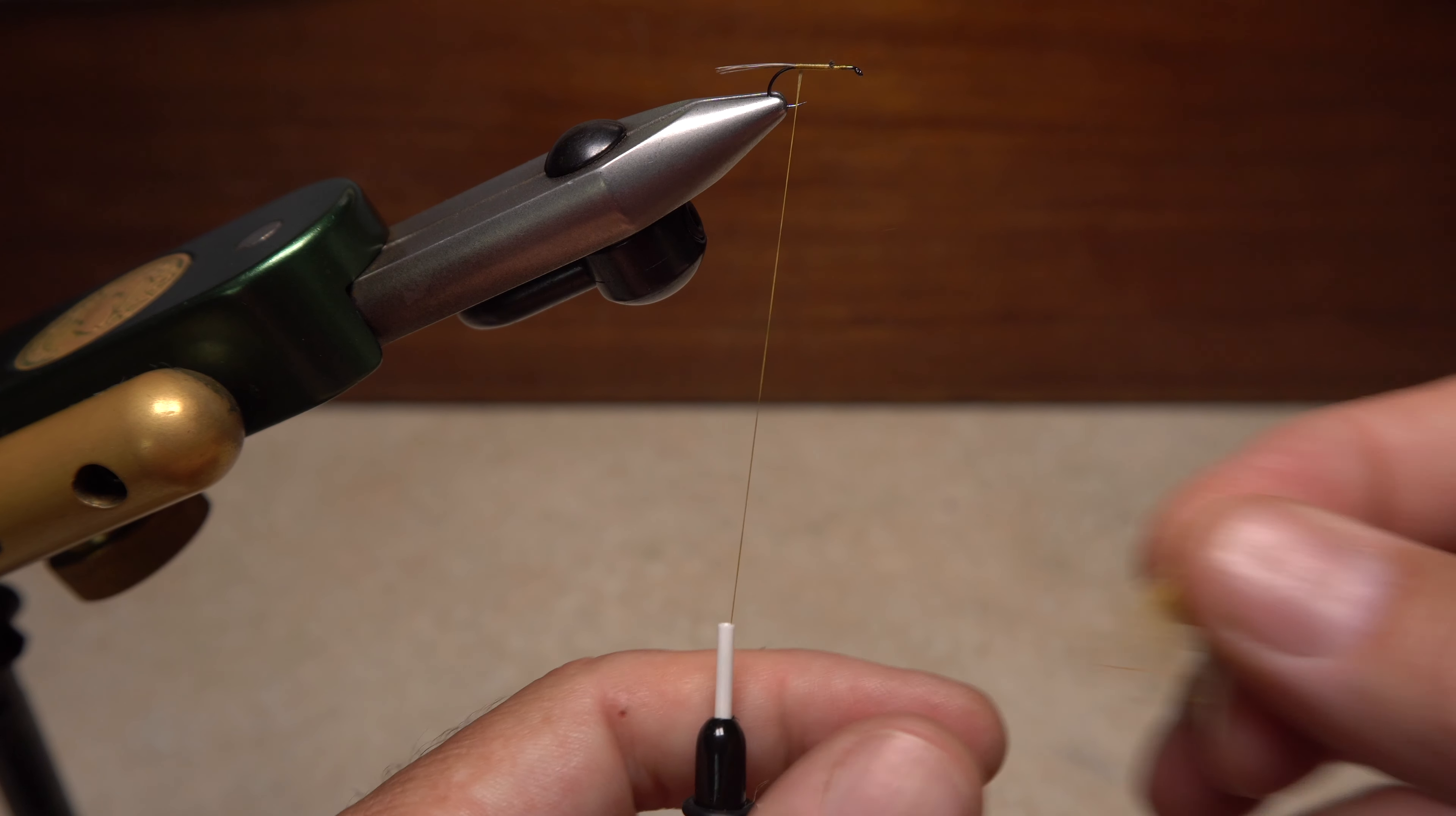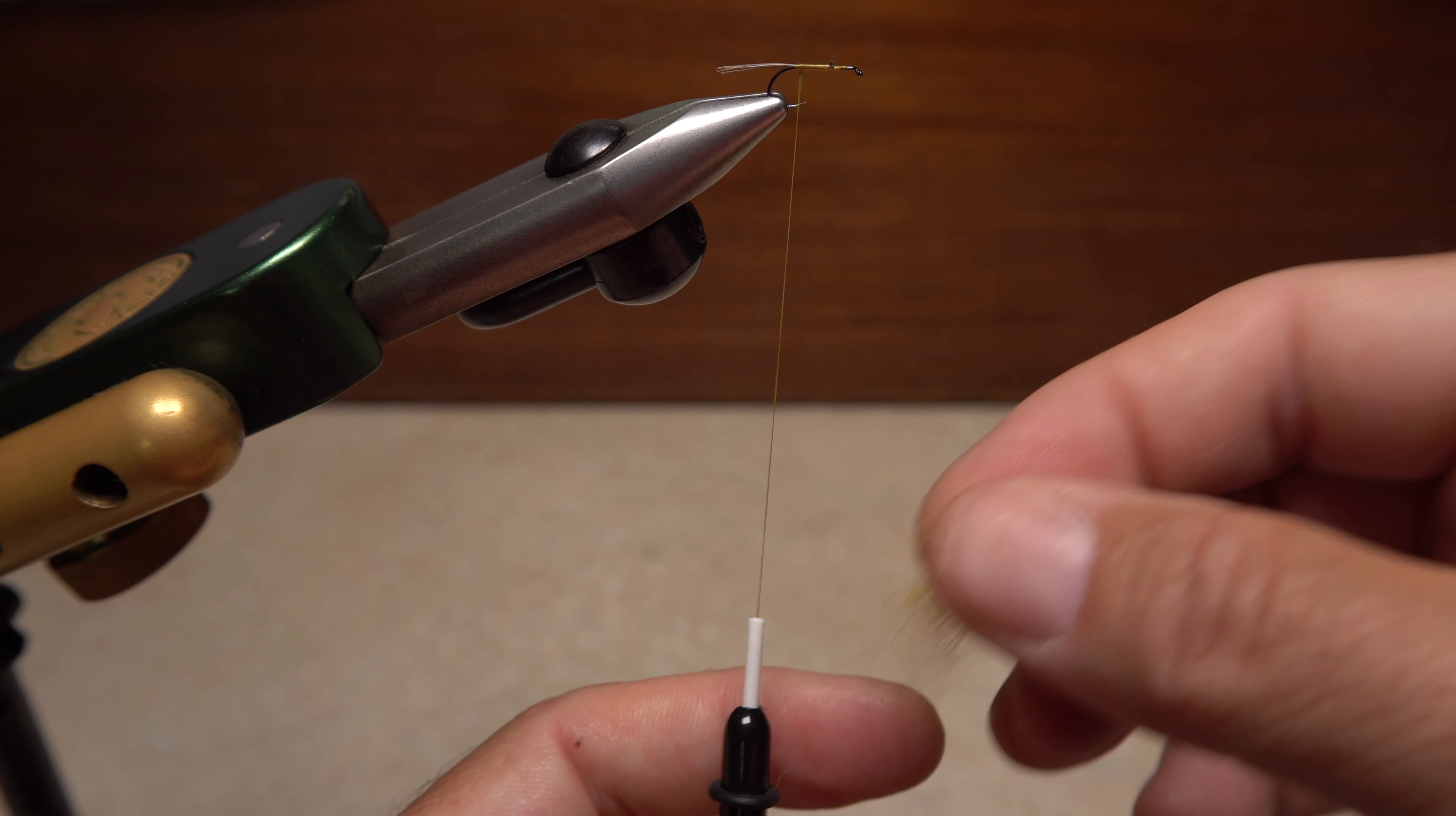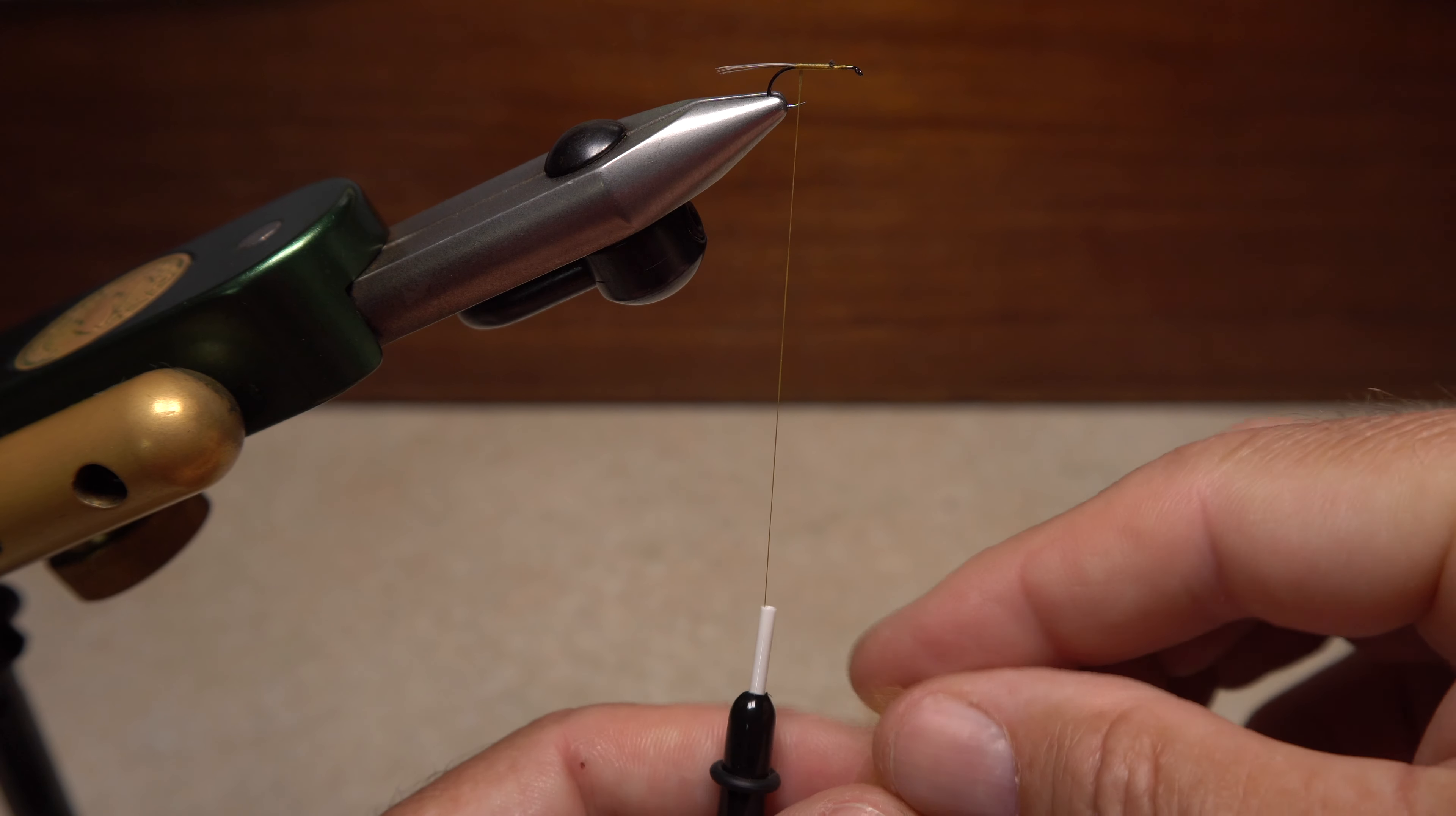After you've pulled a small amount free from the packet or container, pass it to the thumb and index finger of your hand holding the bobbin and pinch the dubbing hard.